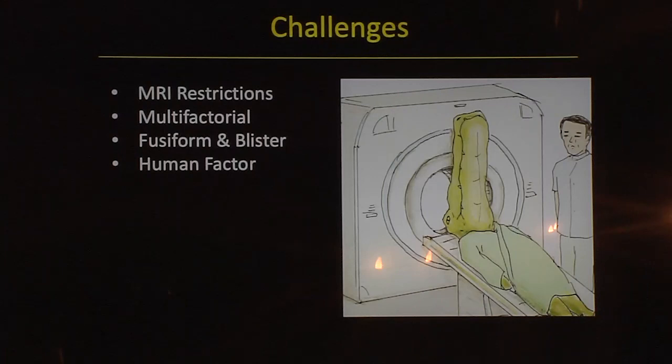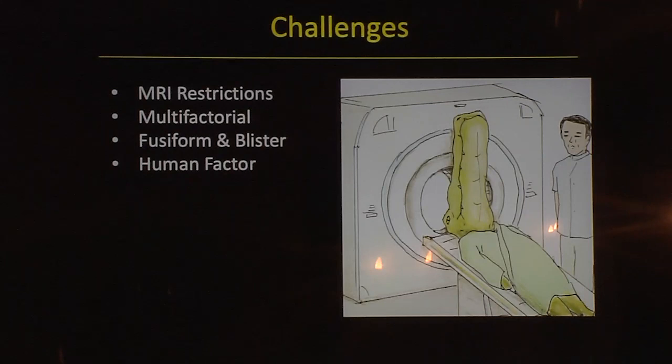Additional challenges include MRI contraindications — many patients cannot undergo MRI — and it's very prone to motion artifacts, especially at 7 Tesla. We've screened about 100 patients and obtained only 25 usable aneurysm scans. For clinical use, 3-Tesla MRI will be the practical option. The problem is also multifactorial — fusiform and blister aneurysms behave differently — and there's the human factor: patients who learn their rupture risk may still demand treatment regardless.